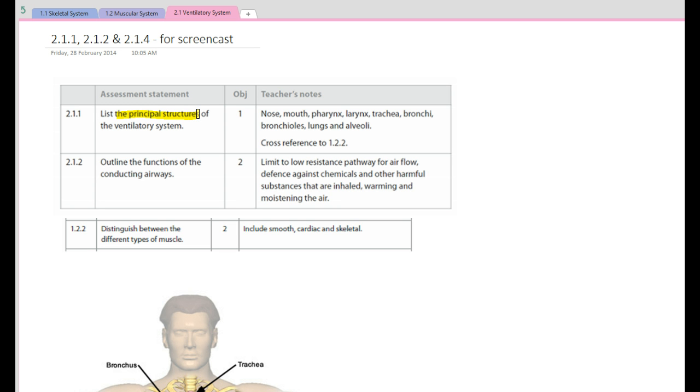Then we're looking at outlining the functions of the conducting airways. And we will look to cross-reference the distinction between different types of muscles with respect to the principal structures of the ventilatory system.